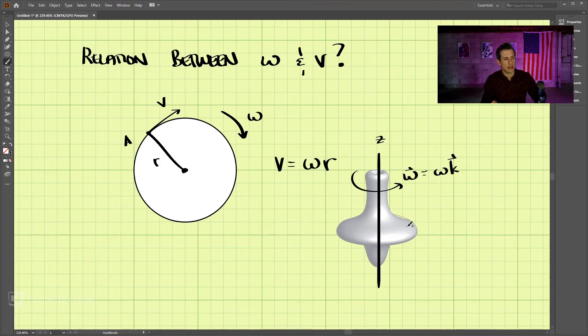So how do we find the velocity at this point here? Well, using this method, we would find the perpendicular distance, the shortest distance to the centroidal axis, the rotating axis here.